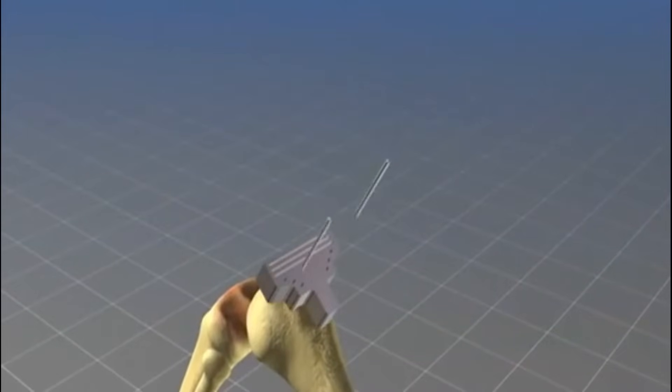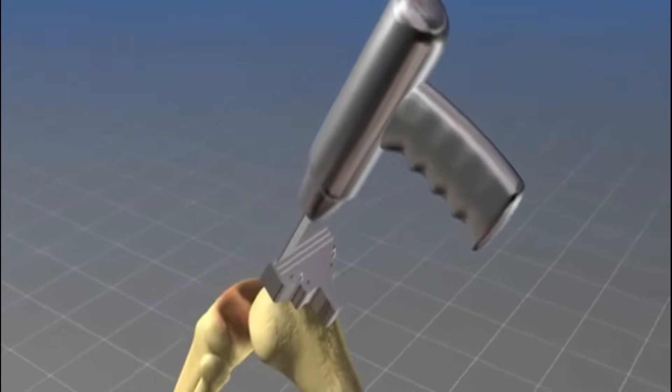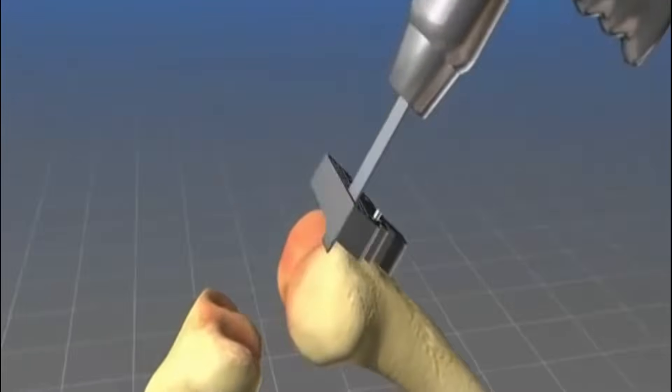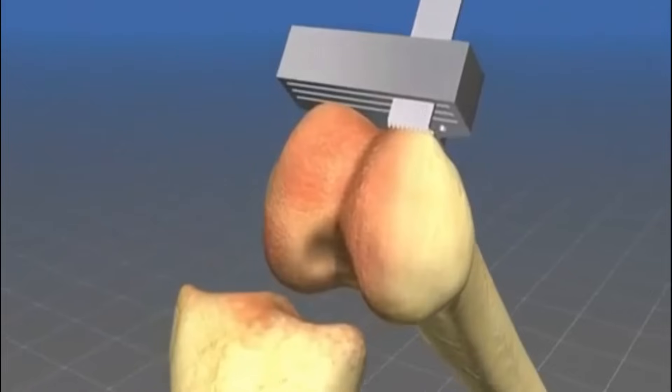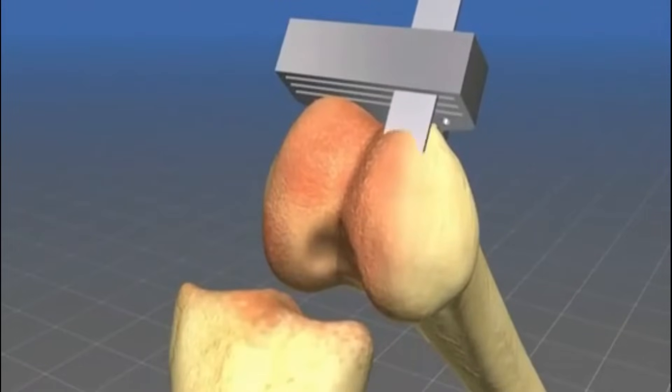When I start with the femur, I remove with a precision saw exactly that amount of the damaged cartilage and bone, which is later replaced by the prosthetic component. In this case, it's exactly 9 millimeters.